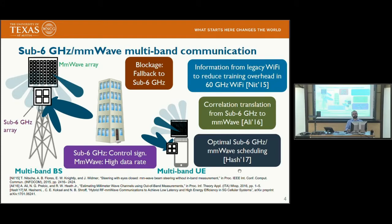Obtaining information from the sub-6 GHz channel is interesting because it is possible that millimeter wave communications and sub-6 GHz communication will happen simultaneously. This could be, for example, a multiband communication system that falls back to sub-6 GHz if there is blockage in millimeter wave, or it may be that for indoor coverage you use sub-6 GHz band and for outdoor coverage you use millimeter wave. Even if both are operating simultaneously, you may use sub-6 GHz for control signaling.